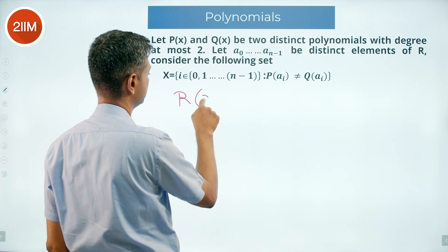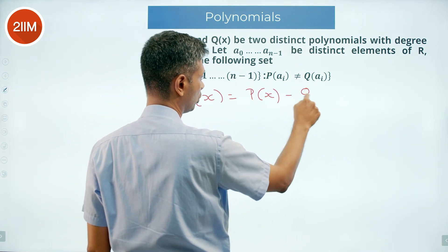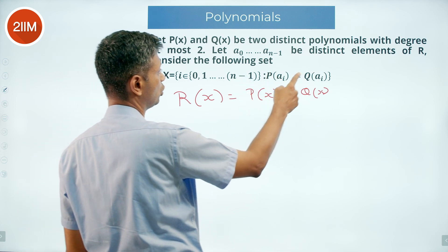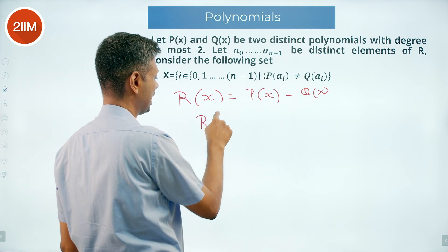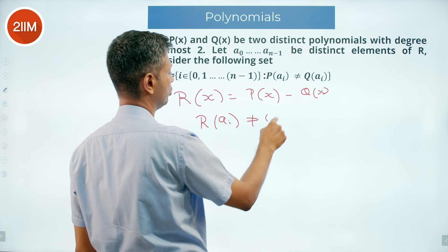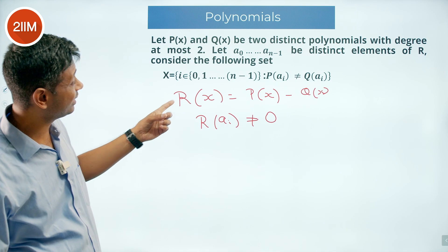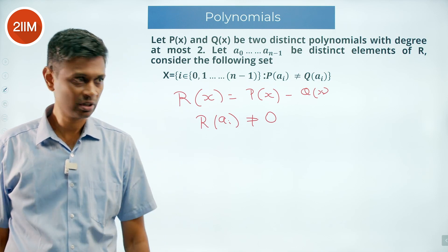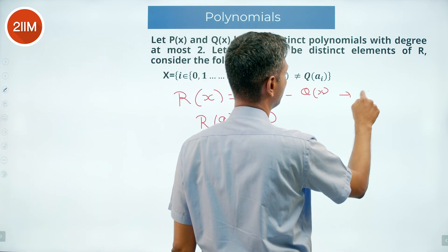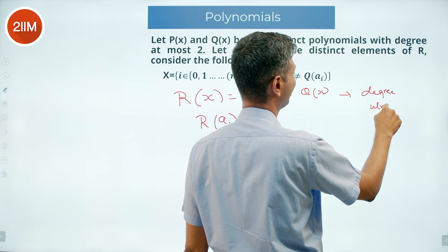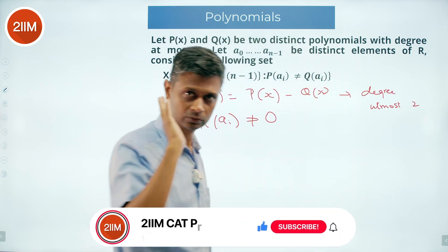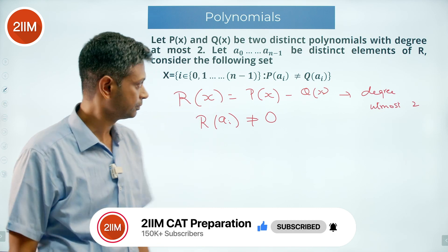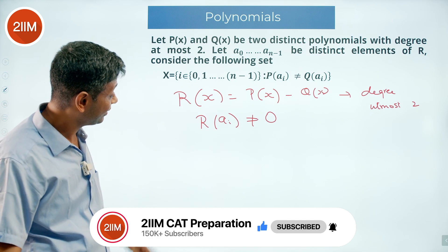I'll reframe the entire question by introducing R(x) = P(x) - Q(x). Now the condition P(aᵢ) ≠ Q(aᵢ) is equivalent to R(aᵢ) ≠ 0. Since P(x) and Q(x) are distinct polynomials of degree at most 2, R(x) = P(x) - Q(x) is also a polynomial of degree at most 2 — at most quadratic.